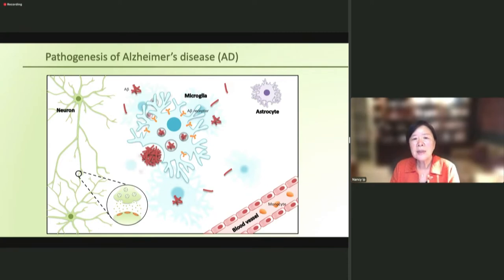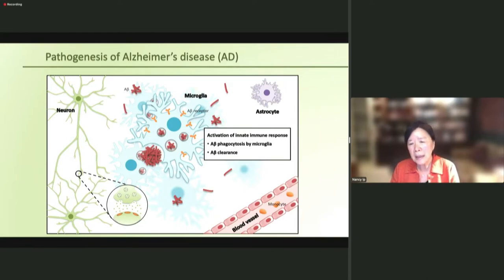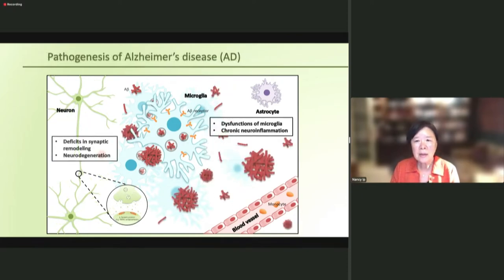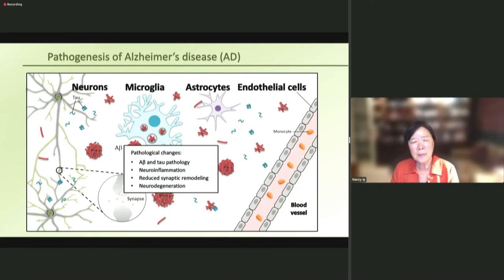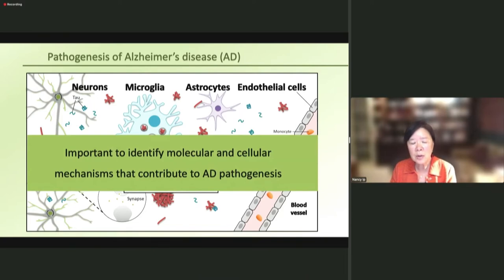Alzheimer's disease is a complex disease. As A-beta accumulates, microglia are activated to phagocytose and clear A-beta. As A-beta continues to accumulate, it can result in dysfunctional microglia, chronic neuroinflammation, leading to deficits in synaptic remodeling and neurodegeneration. There are different cell types that contribute to AD pathogenesis, including neurons, microglia, astrocytes, and endothelial cells. It is important to identify molecular and cellular mechanisms that contribute to AD pathogenesis.